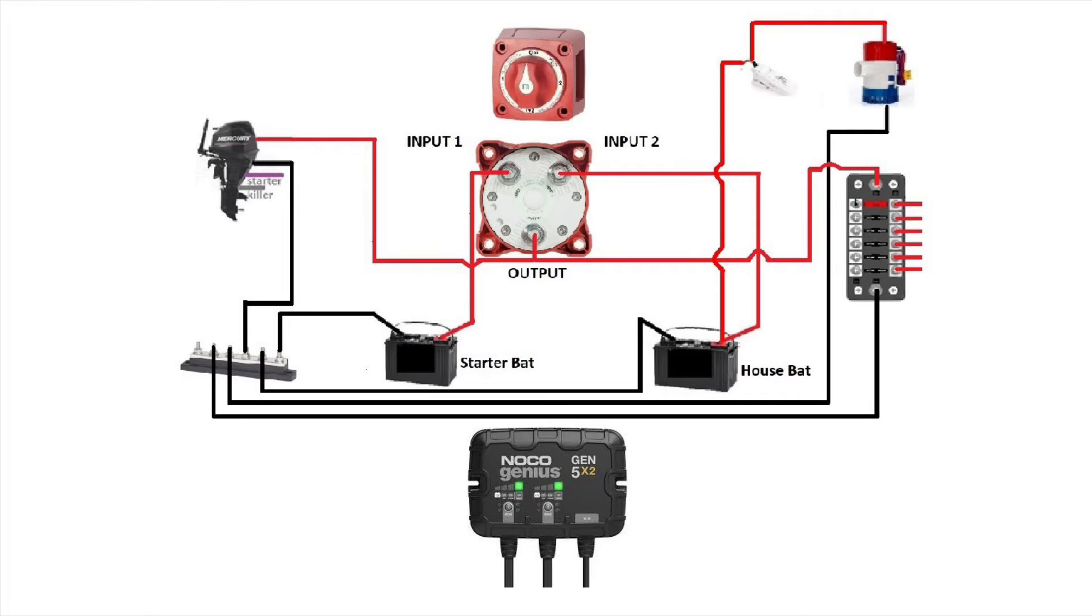And let's start the connections. All right, now we're going to slow things down a little because these are the new connections to do. So there's going to be two outputs on your Noco Genius 5. One will go to the starter battery and the other one will go to the house battery.